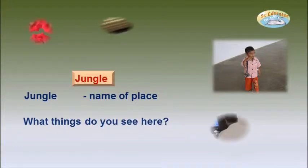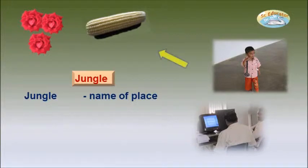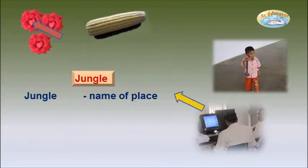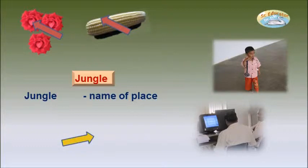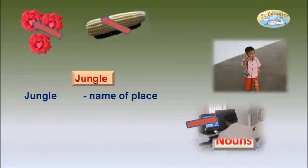Now look at the pictures — what things do you see here? Here are roses or flowers, corn, and a computer. What are these names called? All these names are called nouns. Can you name these things? They are also called nouns.